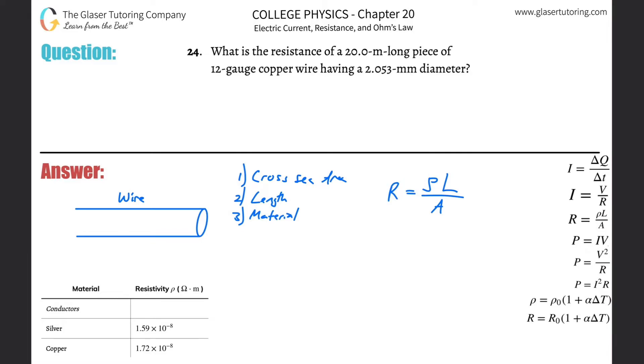All right, so basically now all we have to do here is plug in the values. So what material are we dealing with? We're dealing with copper. So what is the resistance of a 20-meter long piece of 12-gauge copper having 2.053 millimeters diameter? By the way, the 12-gauge just tells you the thickness essentially, but you're not going to have to memorize any of that. The 12-gauge copper correlates with having a diameter of 2.053 millimeters.